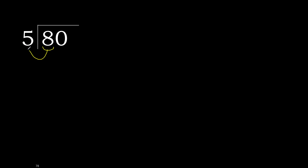80 divided by 5. Starting with 8 — 5 multiplied by which number is nearest to 8 but not greater? 5 multiplied by 2 is 10, which is greater. 5 multiplied by 1 is 5, which is not greater. 8 minus 5 is 3.